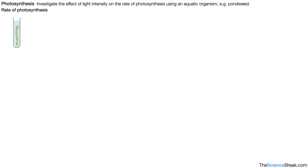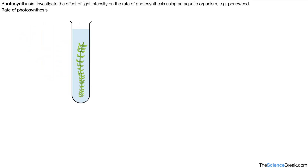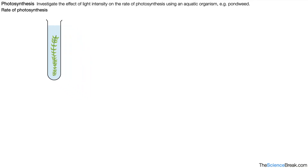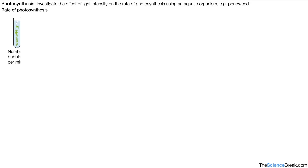Let's look at how we would actually measure the rate of photosynthesis. One way is to look at the number of bubbles produced by some pondweed. Here's some pondweed in a boiling tube with some water — it produces bubbles and we could count those bubbles. An example of rate would be number of bubbles per minute, for example 10 bubbles per minute.